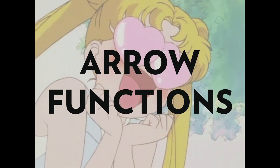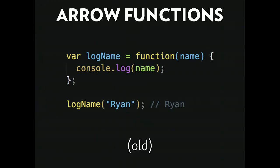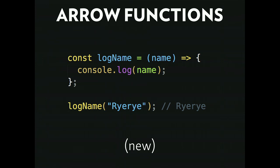That takes us to one of my favorite things: arrow functions. Arrow functions are super cool. In ES5, you have a function, pass in a name, and log that name. With an arrow function, all we're doing is removing the 'function' keyword, putting the parameter right here, and using what's called a fat arrow — equals greater-than sign. It's the same thing. That's arrow functions.